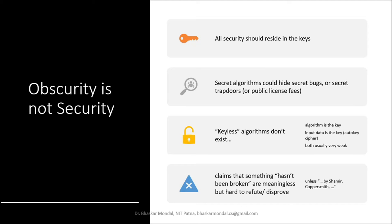Keyless algorithms do not really exist. Sometimes you will hear about algorithms called keyless algorithms, but actually there is no algorithm that is truly keyless — there is always something acting as a key. For example, the algorithm itself may be the key, or the input data acts as the key, which is called an auto-key cipher. These are usually very weak.